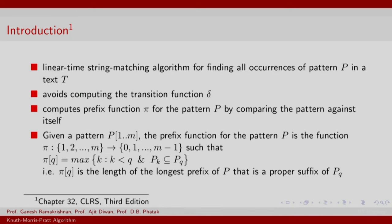The idea of the linear time string matching algorithm using KMP avoids computing the transition function explicitly, but instead leverages the idea by which delta was computed to find a so-called prefix function pi. This prefix function pi links to the index of the pattern P that has the longest prefix for any index i of the pattern. So, pi(q) is the maximum value of index k such that P[1..k] happens to be a proper suffix of P[q]. In other words, k is the length of the longest prefix of P that is a proper suffix of P[q]. This was exactly the idea used to compute delta, and we are going to leverage pi(q) directly.